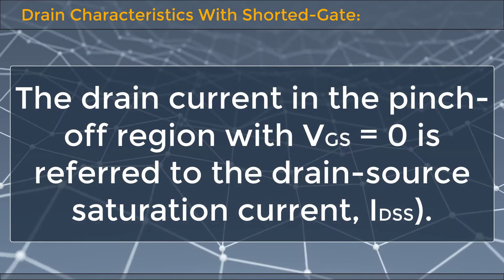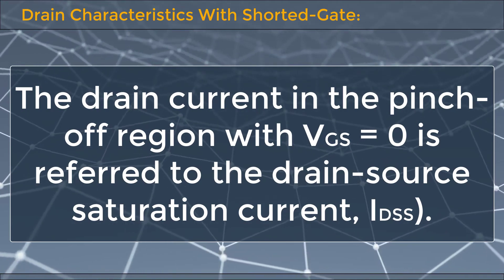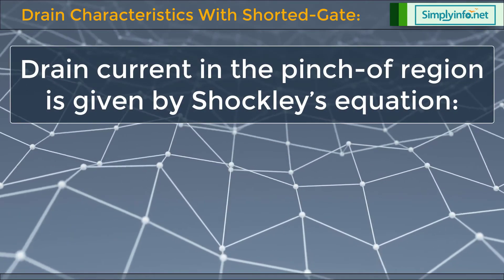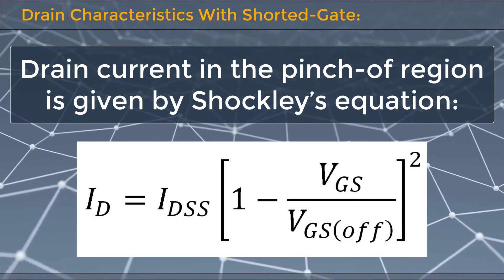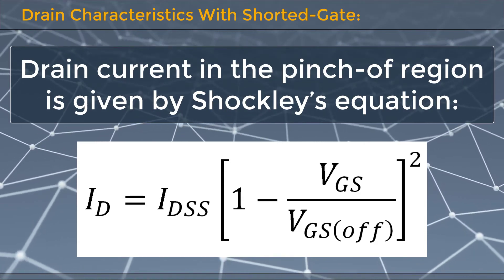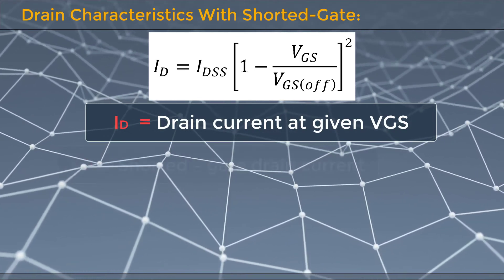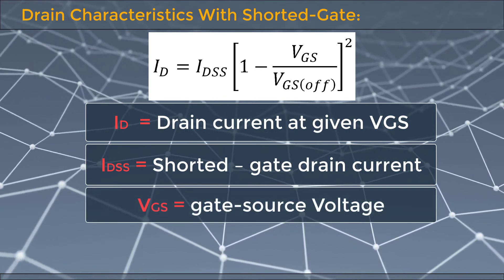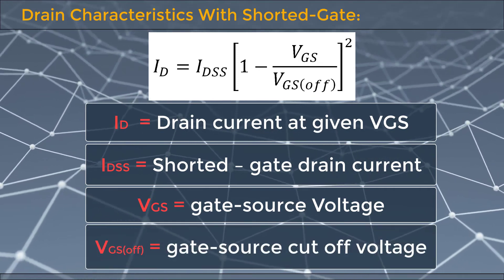The drain current in the pinch-off region with VGS equal to 0 is referred to as the drain source saturation current IDSS. Drain current in the pinch-off region is given by Shockley's equation: ID = IDSS × (1 − VGS / VGS(off))². Where ID is the drain current at a given VGS, IDSS is the shorted gate drain current, VGS is the gate source voltage, and VGS(off) is the gate source cutoff voltage.